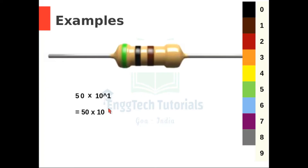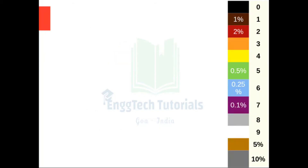So it is 50 into 10, which is 500 ohms, where ohms is the unit of resistance. Now since it is a 3 band resistor, its default tolerance level is 20%. So remember, if the tolerance band is not given or the resistor is a 3 band resistor, then its default tolerance is 20%, and we write it as plus or minus 20%.